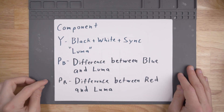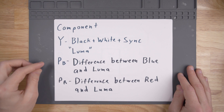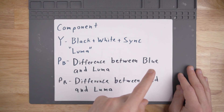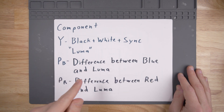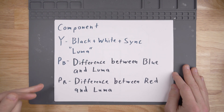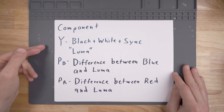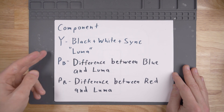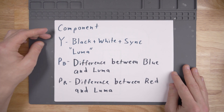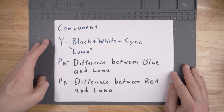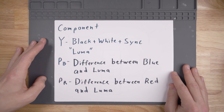The PB signal and PR signal are signals that represent the difference between the color blue and Luma, or the color red and Luma. The PB and PR signals could be used together along with Luma to actually get the green color information from the Luma signal. Long story short, this is just another way of representing RGB, especially in the NTSC format.